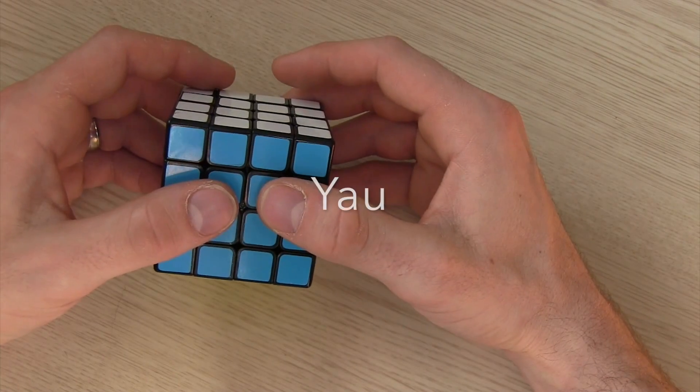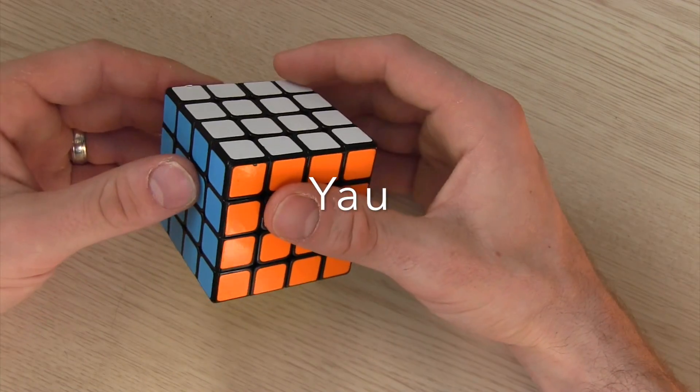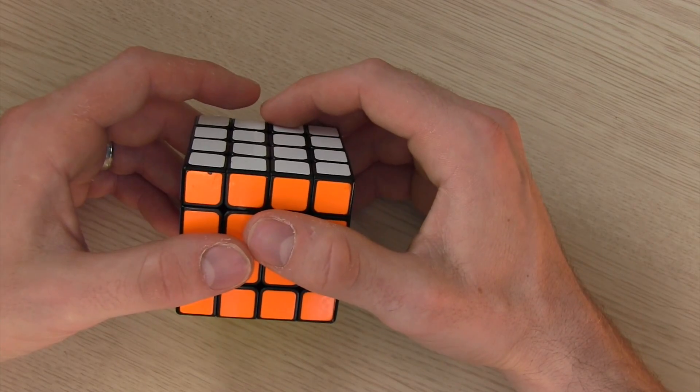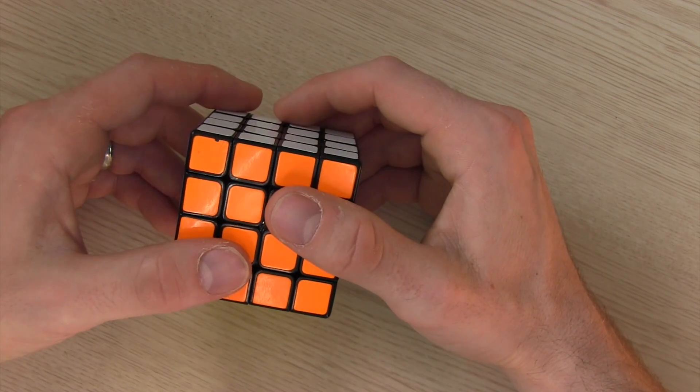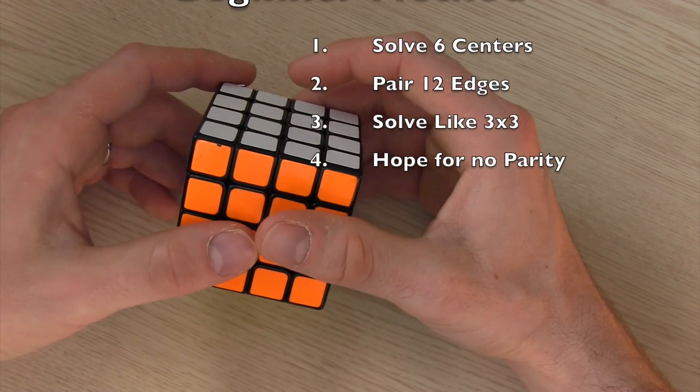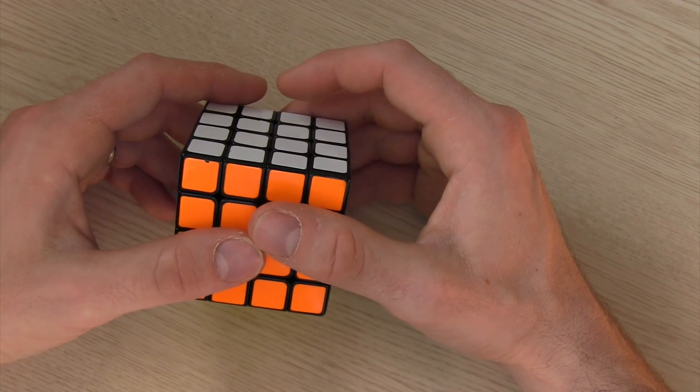So let's talk about Yau method. Yau is probably one of the most used methods especially for professional speed solvers. Now if you know how to solve a 4x4 with basic method you pretty much already know Yau. So in basic method you solve all six centers, all 12 edges, and then solve like a 3x3 hoping to not have any parity errors.